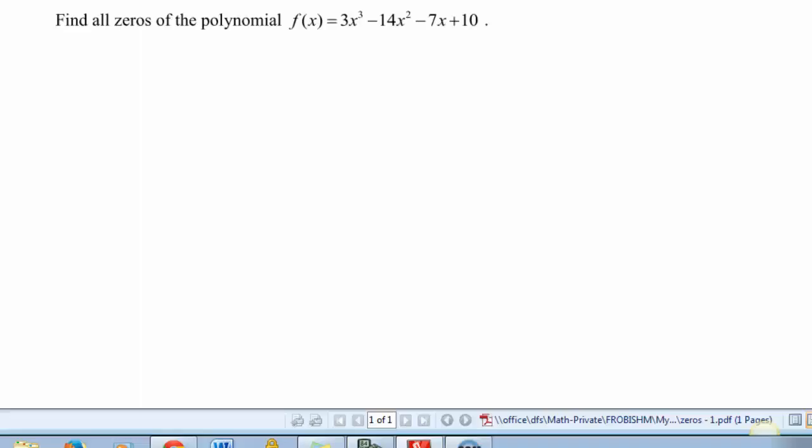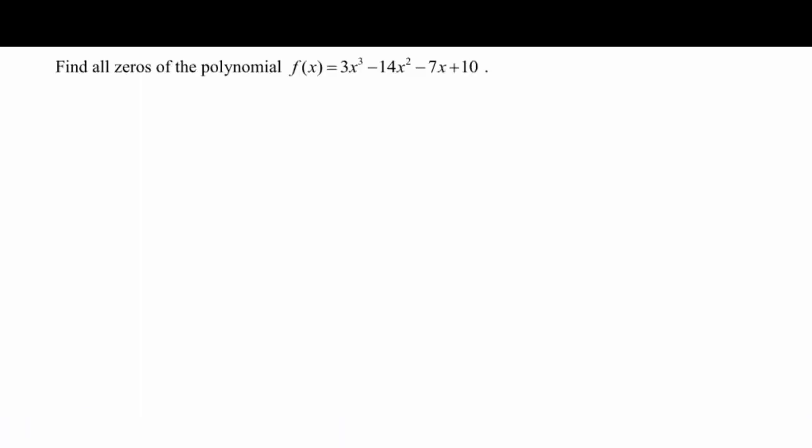Hello and welcome to a screencast about finding all the zeros of a polynomial. So I have a third degree polynomial here, f of x equals 3x to the third minus 14x squared minus 7x plus 10.